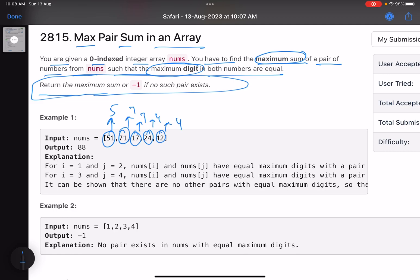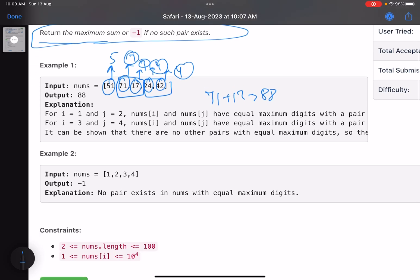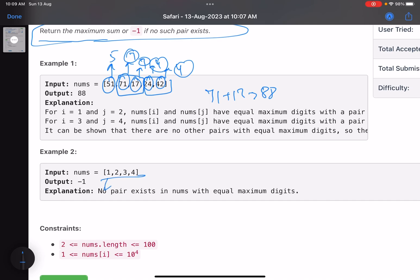So what are the pairs you can form? Obviously you can form pair of these two numbers because they have the same max digit. Or you can form the pair of these two numbers. Now what's the maximum sum? Obviously it's 71 plus 17, so that gives us 88. That's my answer.